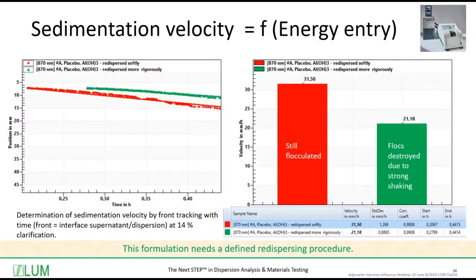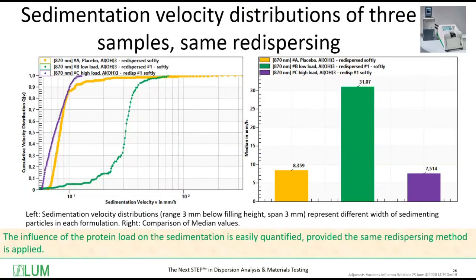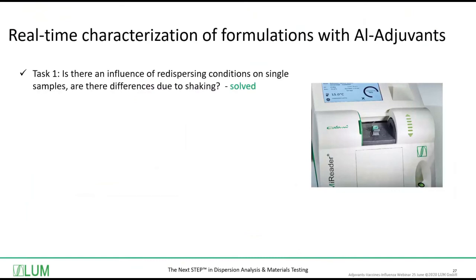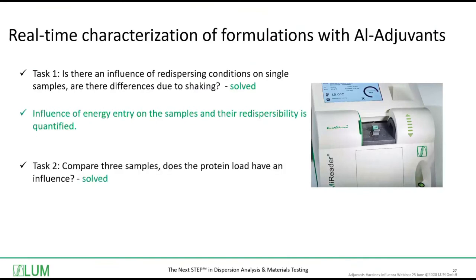What can we learn from that? This formulation needs a very defined redispersing procedure. There is a significant influence of the protein load on the sedimentation and on the sedimentation velocity distribution, which can easily be quantified — provided, of course, the same redispersing method is applied. Task number one is solved: we detected an influence of the energy input on the samples and their redispersibility, and that is easily quantified. Task number two is also solved: we compared the three samples and can easily quantify the influence of protein load on their redispersibility.